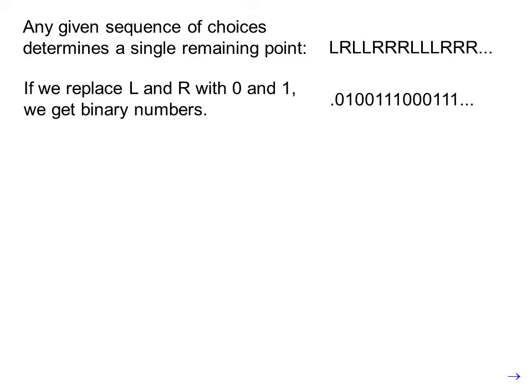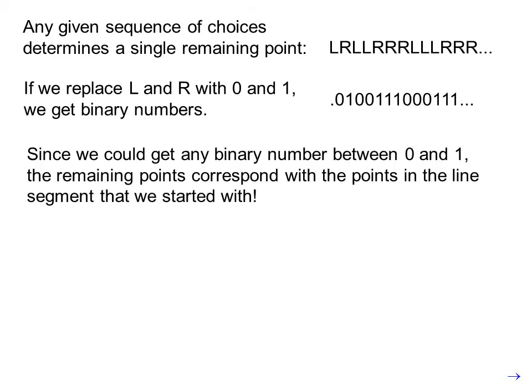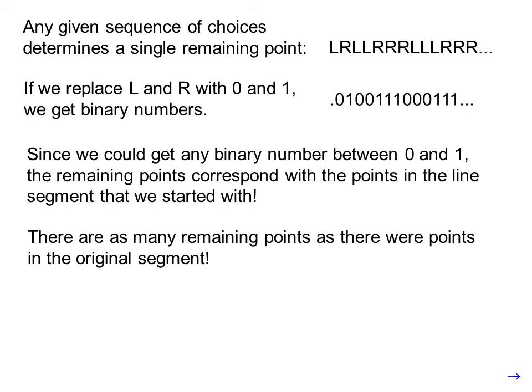For example, 0.010001100001 11, and so on. Since we could get any binary number between 0 and 1, the remaining points correspond with the points in the line segment that we started with. There are as many remaining points as there were points in the original segment.